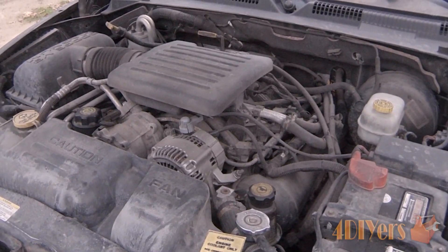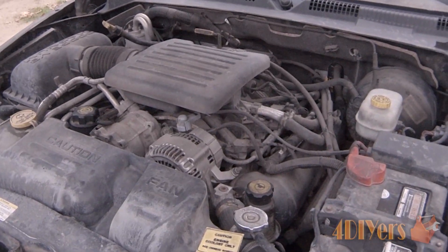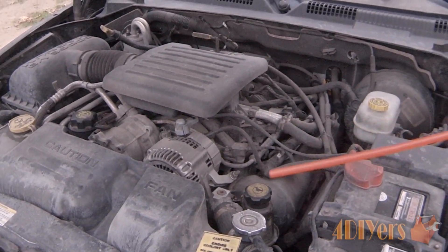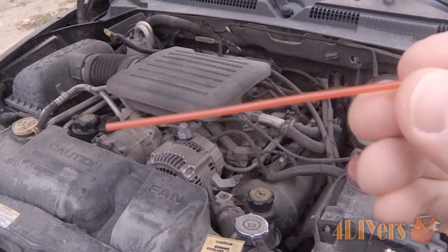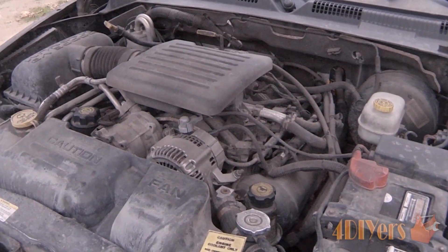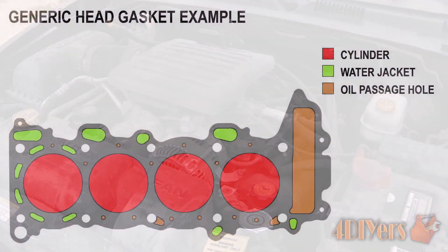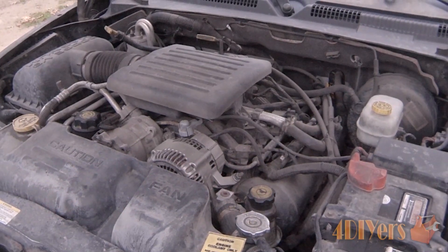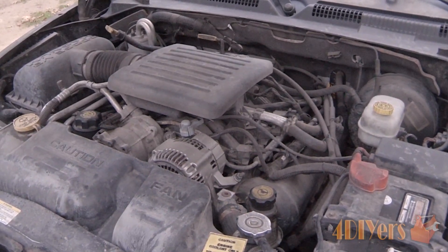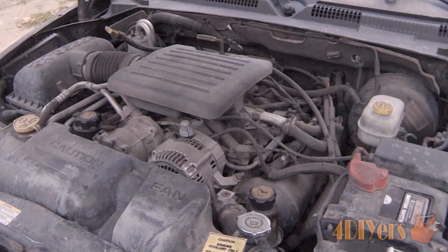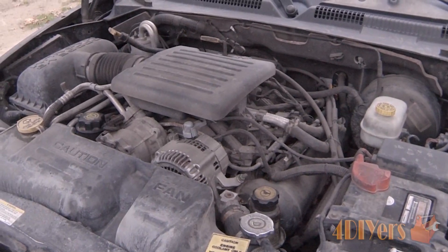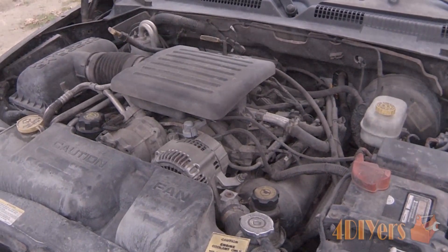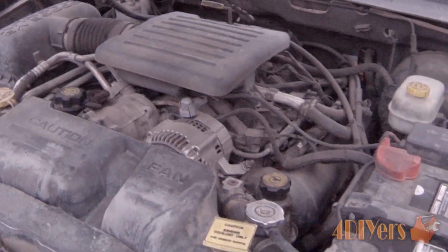With this being a V configuration engine, we'll have four cylinders on each side. This engine has two separate head gaskets, one for each side — the heads are not connected. You will have other engines, like an inline 4 or inline 6, which have one solid head gasket throughout.